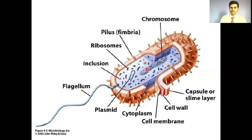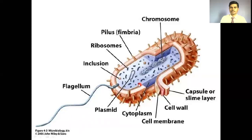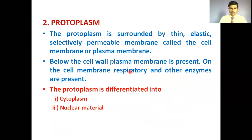Inner to the bacterial cell wall is the cell membrane or plasma membrane, and inner to that is the bacterial cytoplasm or protoplasm. Inside the bacterial protoplasm there is the bacterial chromosome — also called the nucleoid region. Along with the chromosomal DNA, bacteria also show circular double-stranded plasmid, which is autonomously self-replicating DNA. Ribosomes and reserve food materials are also present.